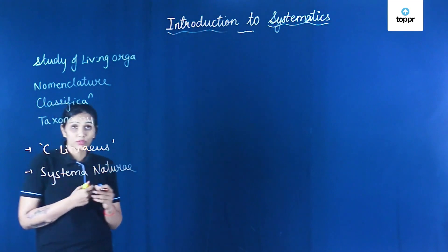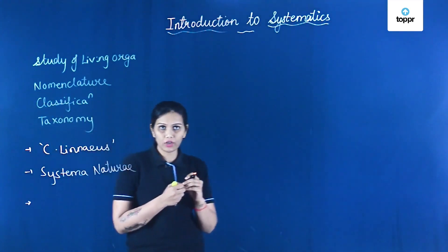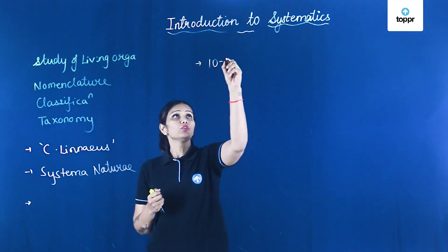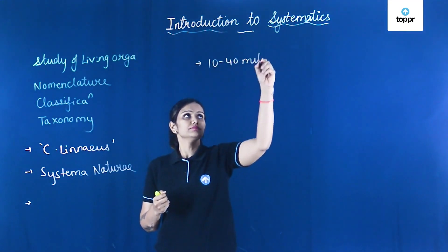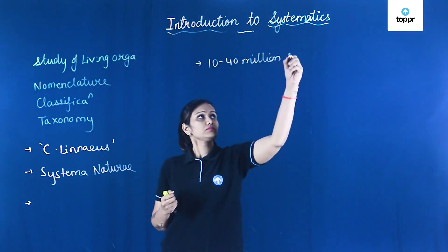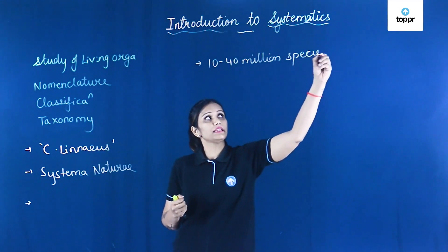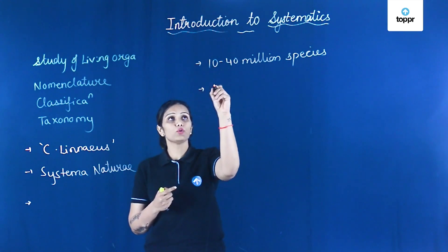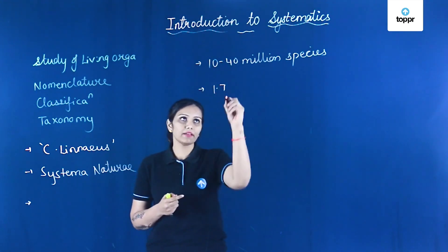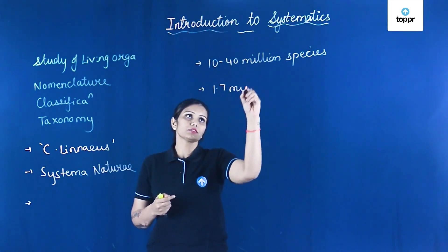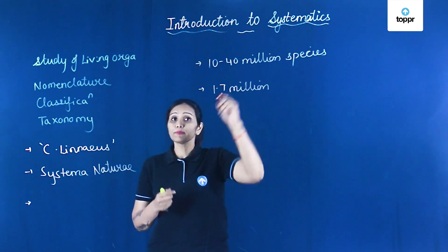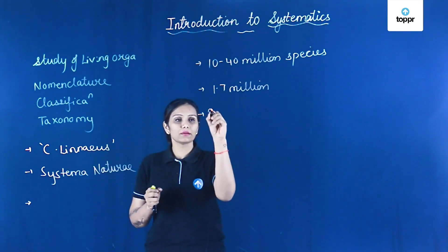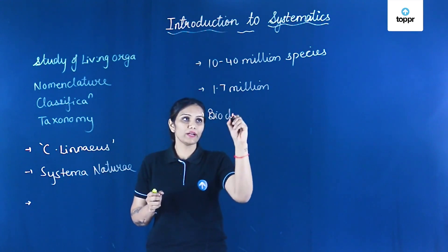As you know, there is a great diversity of living organisms on this earth. It is estimated that 10 to 40 million species of living organisms are there on earth, out of which we are able to describe only 1.7 million species. A lot of species have yet to be discovered, and systematics tells us about this great biodiversity.